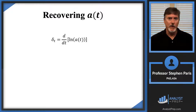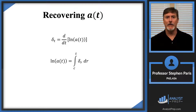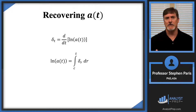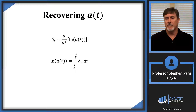You might see the process we need to go through to unwind things. First, I need to take an antiderivative of both sides — that's an integral. When I integrate both sides, on the left-hand side I write the natural log of a(t), and on the right-hand side I integrate delta_t. This is a fact from calculus — one of the fundamental theorems of calculus. The right-hand side can be represented as an integral from some fixed but unknown lower limit c to t, integrating delta_r dr. I use delta_r dr because t is one of the limits of integration.